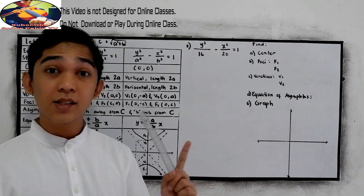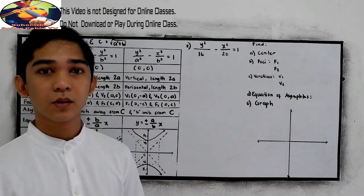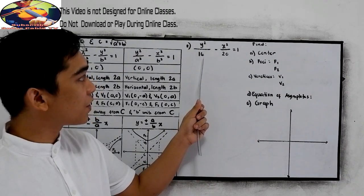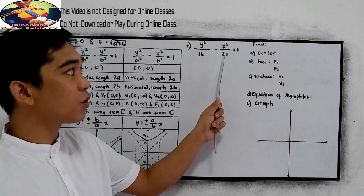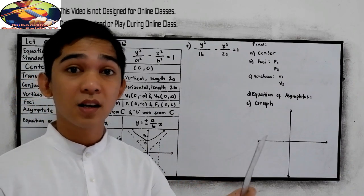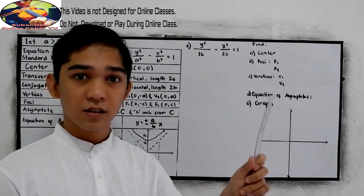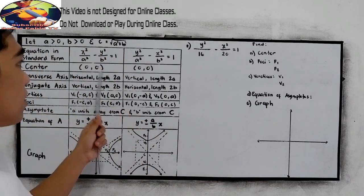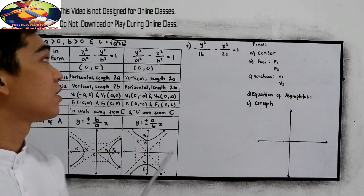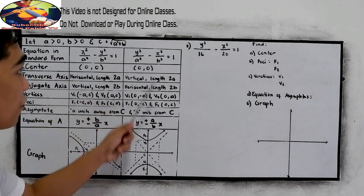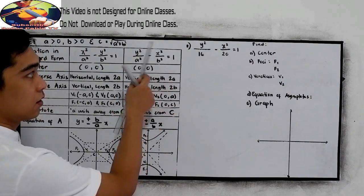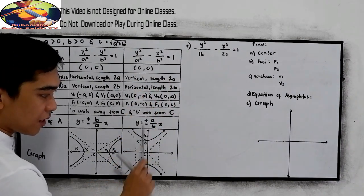First, study the given. The given equation is y squared over 16 minus x squared over 20 is equal to 1. So obviously our center is 0, 0. Our equation in standard form is just like this one, and we're going to follow this step in our table.